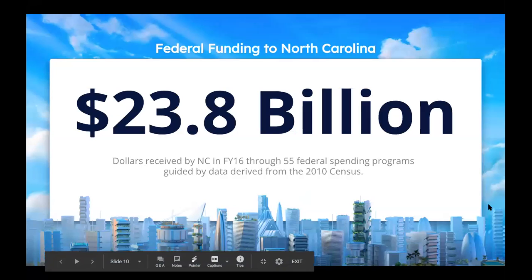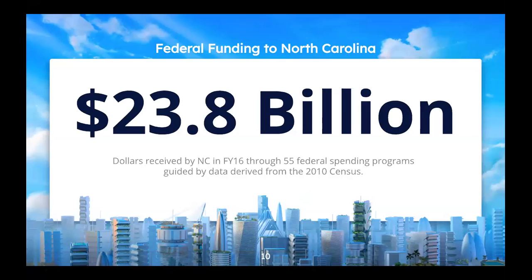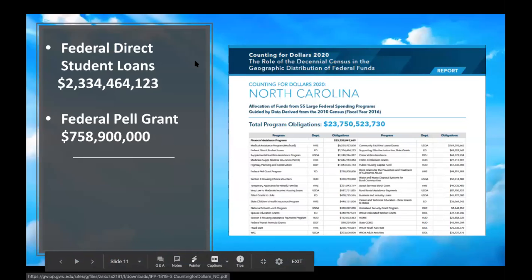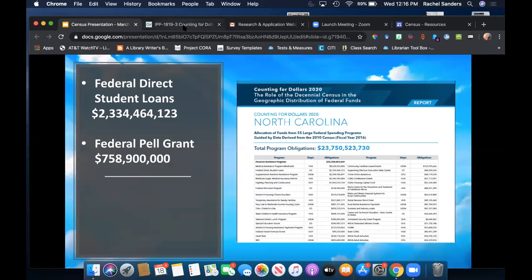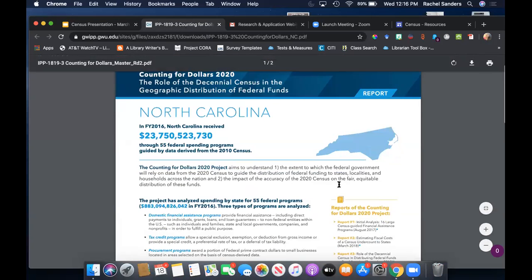Specifically in North Carolina, in the 2016 fiscal year, we got $23.8 billion through federal spending programs, and those programs are directly informed by the last census count we had — which was 2010. So the people who took the census in 2010 are still influencing the amount of money we were getting six or even ten years later. What we do now, or what we don't do now, can have a far-reaching impact on our future, not just immediately but long term.